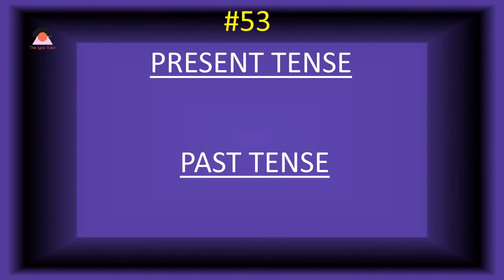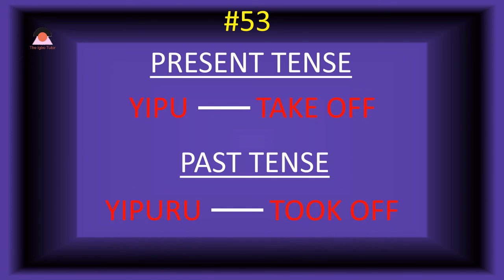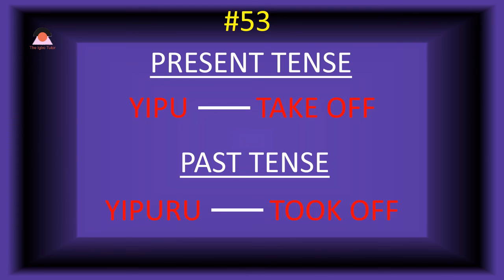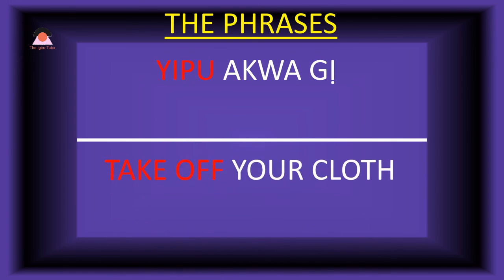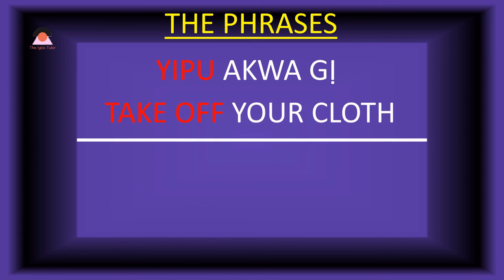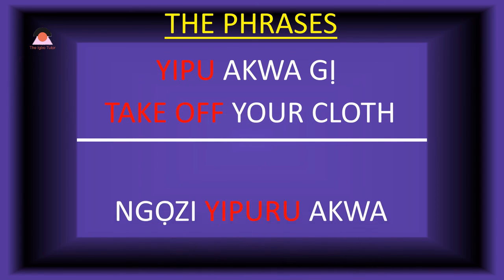Word number fifty-three: 'yipu,' meaning 'take off.' Also used as 'yipu.' The past tense of yipu is 'yipuru,' meaning 'took off.' Present tense phrase: 'yipu akwagi' — take off your clothes.